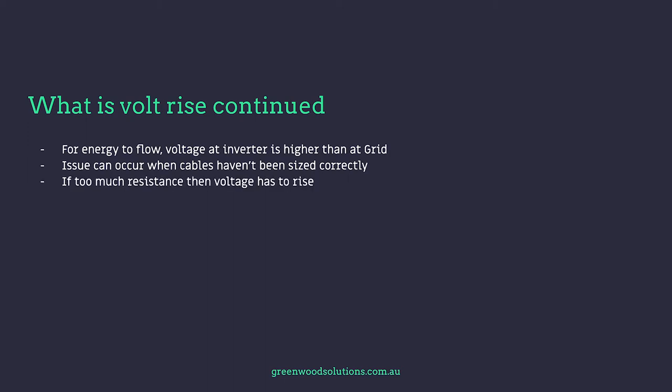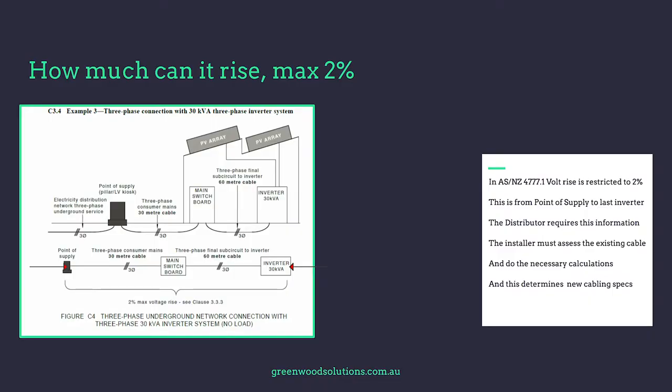If there's too much resistance in the cable, then voltage has to rise to compensate. From a volt rise perspective, it's the AC side we're talking about — not the DC side, purely the AC. In Australia and New Zealand we have standard AS4777.1, and it stipulates a maximum volt rise of two percent.